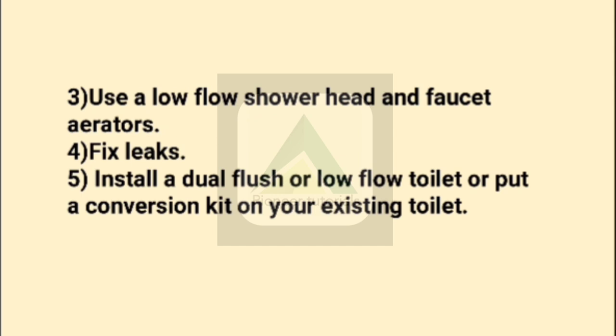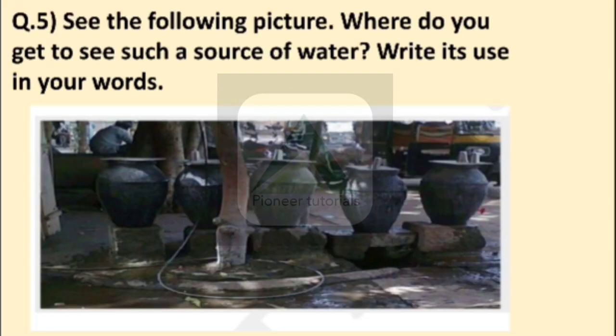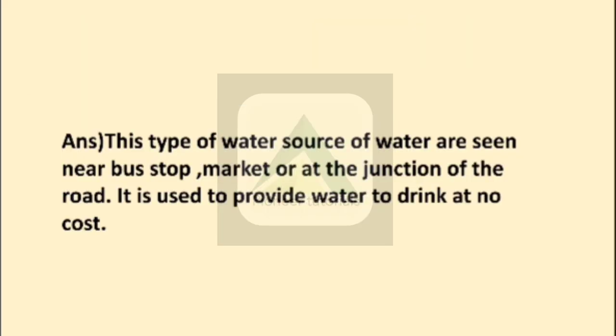Use water in such a way that after cleaning we can reuse it. Question number five: See the following picture — where do you get to see such a source of water? Write its uses in your own words. We can see pots placed for drinking water. This type of water source is seen near a bus stop, market, or at the junction of a road. It is used to provide water to drink at no cost — free of charge.